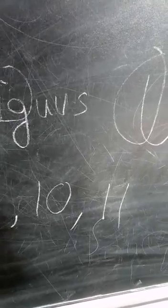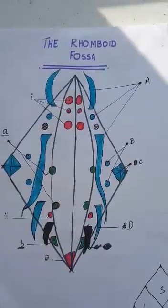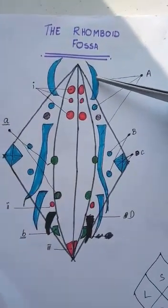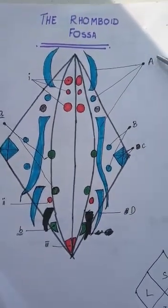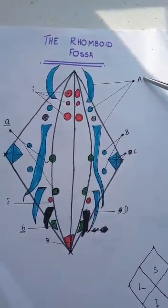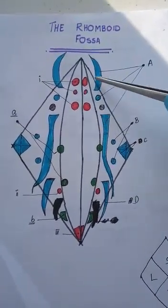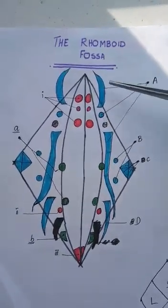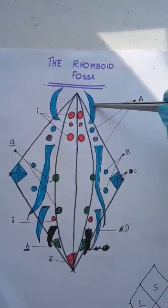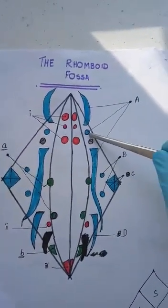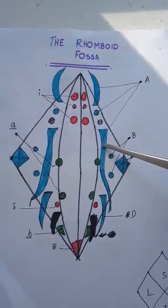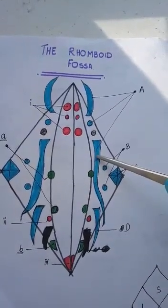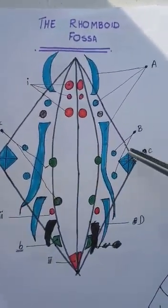I will make a video on cranial nerves to remember easily. Then we can jump into the sensory nuclei. These three nuclei are for the trigeminal nerve: the mesencephalic nucleus of the trigeminal nerve, the pontine nucleus of the trigeminal nerve, and the spinal nucleus of the trigeminal nerve.